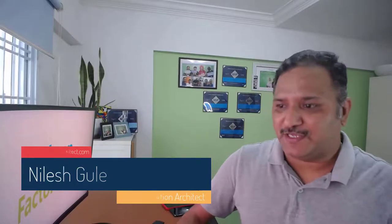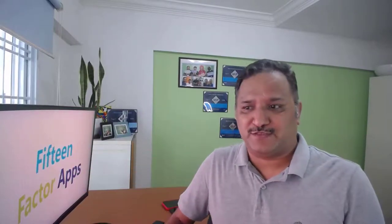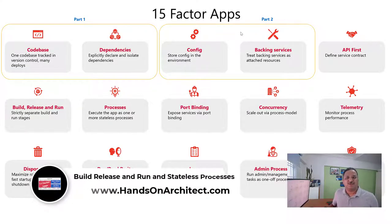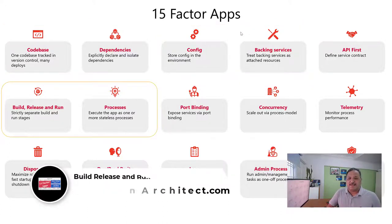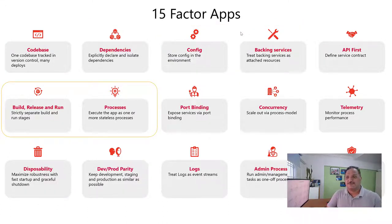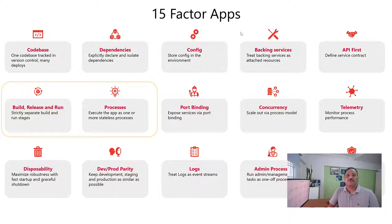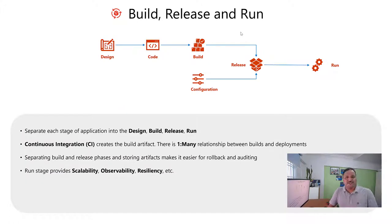In the earlier videos, we covered four of the factors from the 15 factors. In part one, we looked at code base and dependencies, and in part two, we looked at the config and the backing services. In this third part of this 15 factor app series, we are going to see the next two factors, which is build release and run, which talks about strictly separating the build and run stages. And we also look at processes, which talks about executing the application as one or more standalone processes. So let's get started with build release and run.